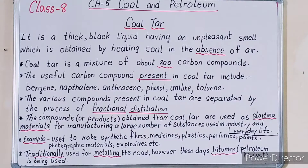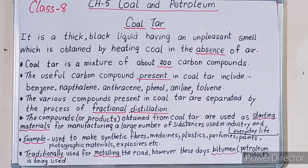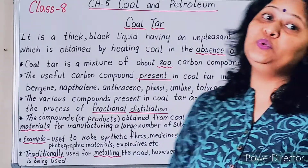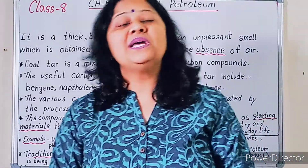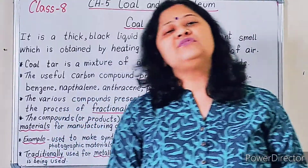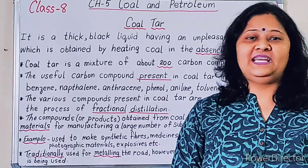The compounds or products obtained from coal tar are used as starting materials for manufacturing a large number of substances. Examples: synthetic fibers, medicines, drugs, plastic, paints, varnishes, explosives, etc.